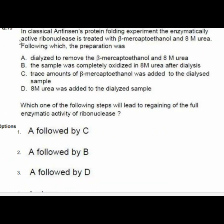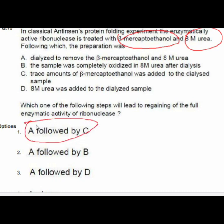Question 15 concerns the classical Anfinsen protein folding experiment where enzymatically active ribonuclease is treated with beta-mercaptoethanol and 8M urea. The correct steps leading to regaining full enzymatic activity of ribonuclease are option 1: A and C.